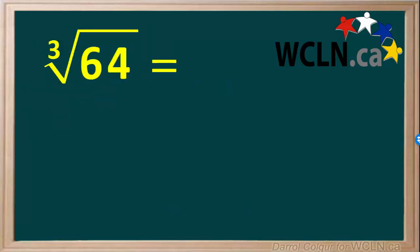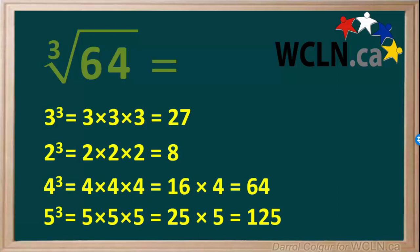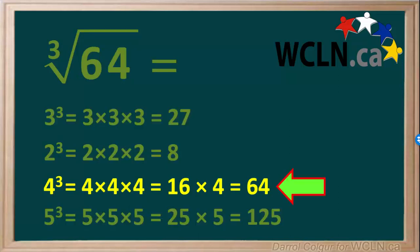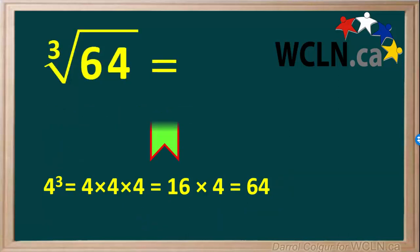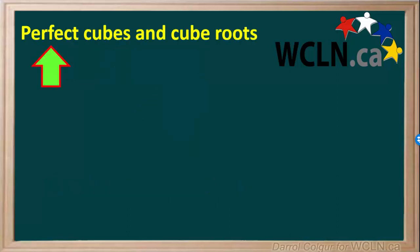To find the cube root of a number, it helps to remember what the cubes of some numbers are. For example, let's say we want to find the cube root of 64. Recalling the cubes we talked about earlier, we see that 4 cubed, or 4 multiplied by itself 3 times, is equal to 64. Therefore, the cube root of 64 is equal to 4, because 4 times 4 times 4 is equal to 64.